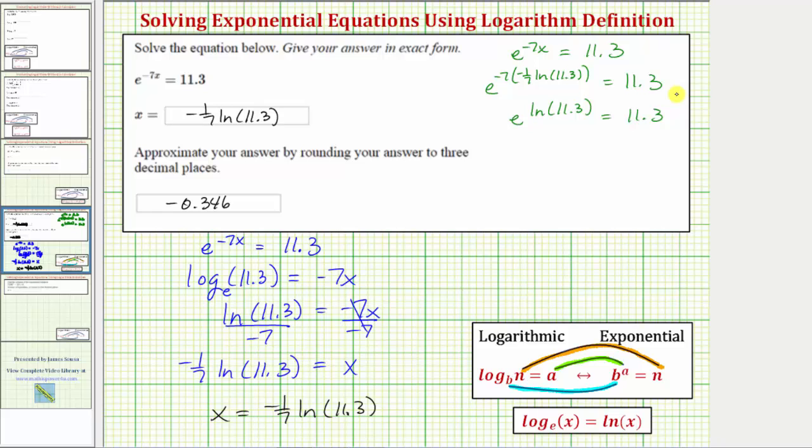Now if we know our properties of logarithms, we should recognize on the left side we have base e raised to the power of log base e or natural log. This simplifies perfectly to 11.3. So this verifies our solution is correct.